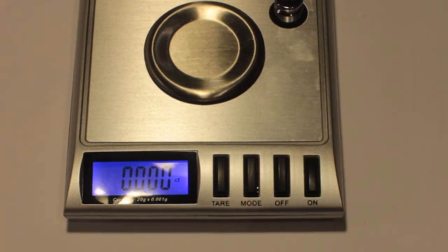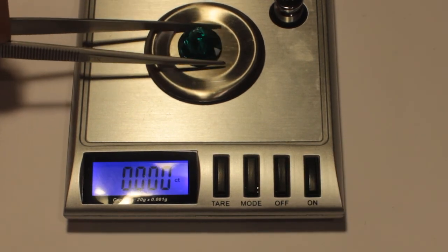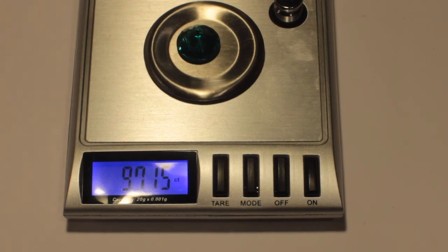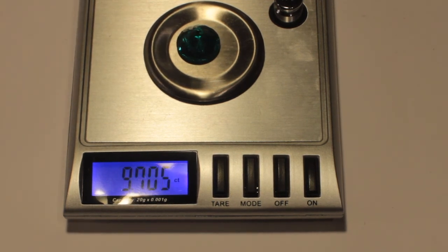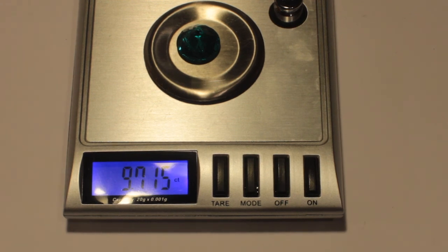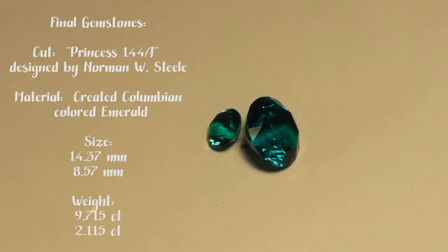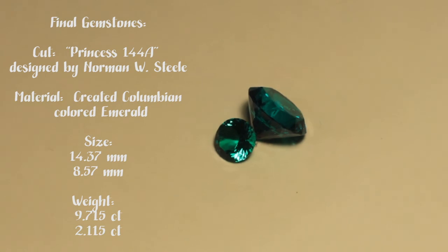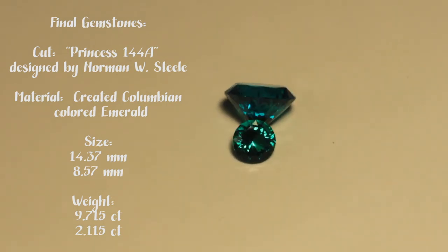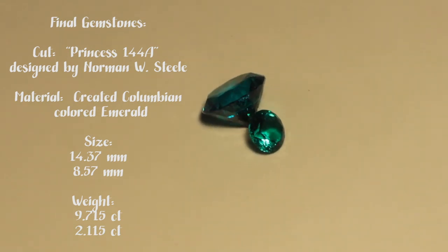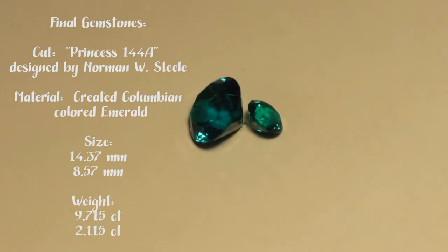And regarding those 48 girdle facets, my recommendation would be to just cut 16 girdle facets every 6 tooth on the 96 tooth index instead of every other tooth while you're using your laps all the way from preforming until you are at the pre-polished stage. And then cut every other tooth or 48 girdle facets. That'll save you a lot of time.